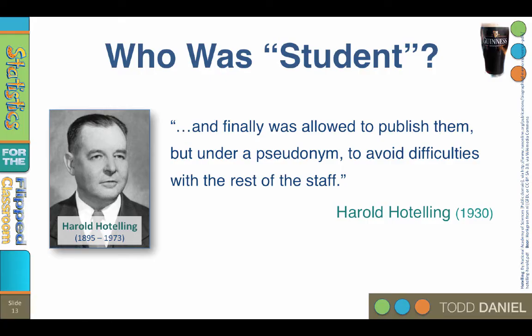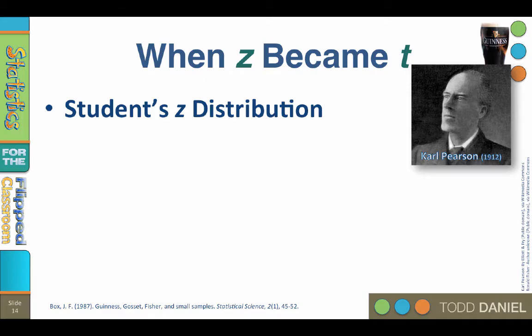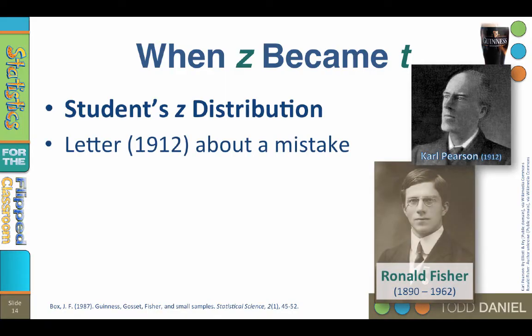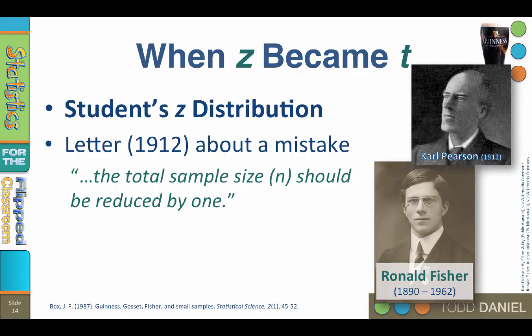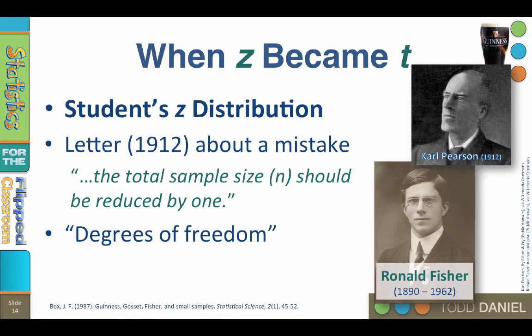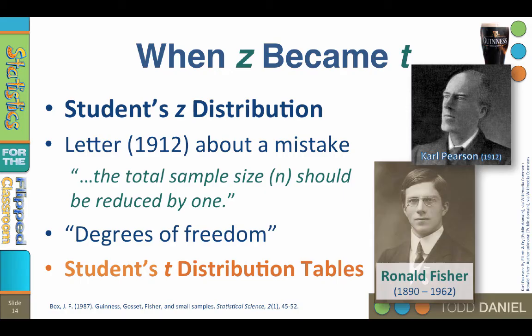Pearson originally called this Student's z-distribution, reflecting Gossett's adjustments to the normal curve. But in 1912, a letter arrived from a mathematics student at Cambridge named R.A. Fisher, inquiring about a mistake in Gossett's 1908 paper about the probable error of the mean. Fisher demonstrated that the total sample size should be reduced by one — in what would come to be called degrees of freedom. Although Pearson remarked that 'it made little difference whether the standard error was divided by n or the rigorously correct n-1,' Gossett encouraged Pearson to publish Fisher's correction in Biometrica. With the revision to Gossett's Student's z-tables using degrees of freedom, the new tables were called Student's t-distribution tables.